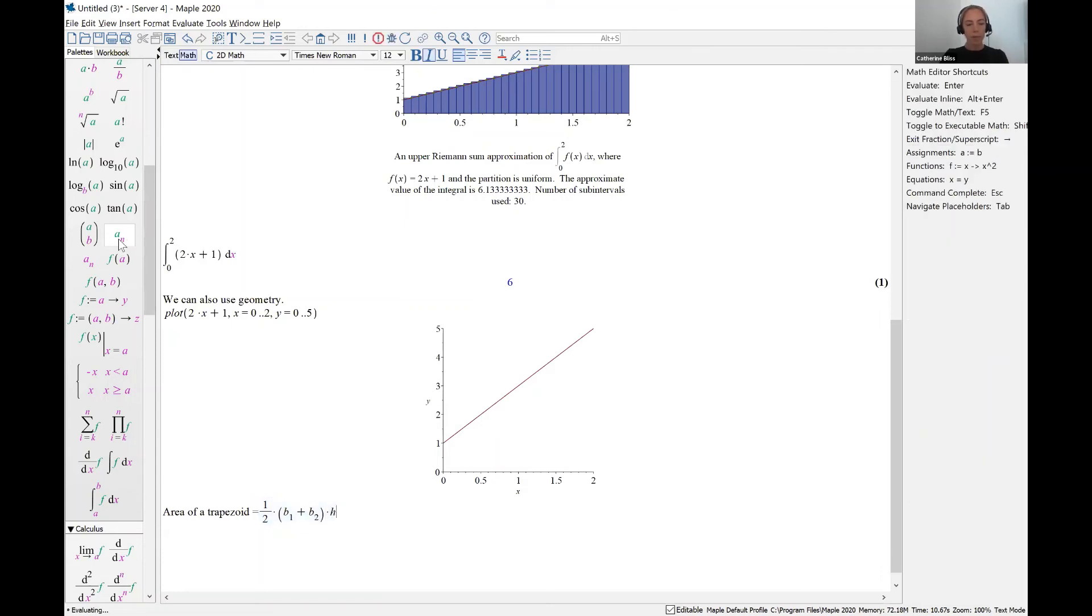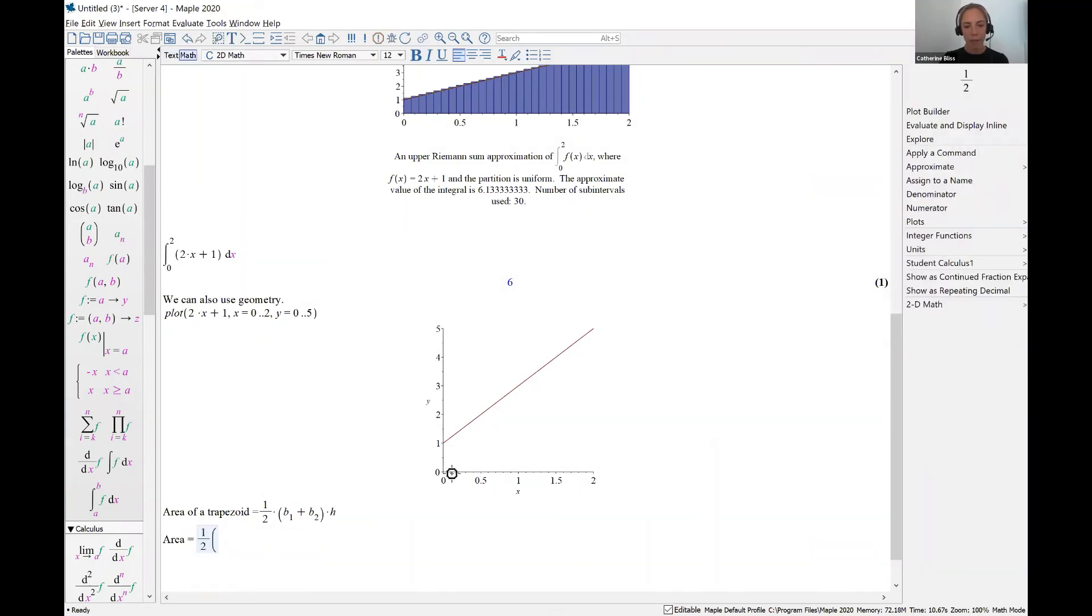plus base 2 times the height. So in our particular case, we have the area equal to 1 half. Now, base 1 is the height of this left-hand vertical side of our figure. So that's 1. Base 2, the other base here, the bases, remember, are parallel sides of a trapezoid. That looks like it's at 5. Right? When x equals 2, the y value there would be 5...